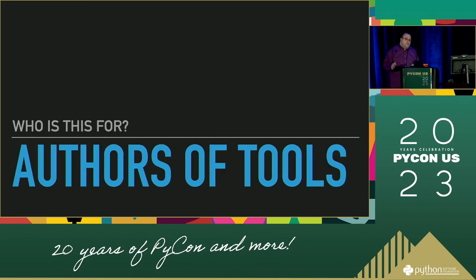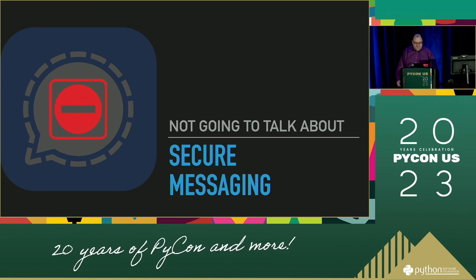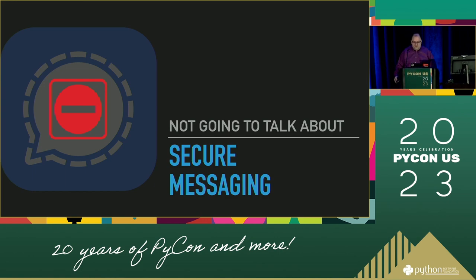I want to talk about how to do this as the author of software that expects to be dealing with secrets. In order to talk about that, I also need to talk about how users are going to behave to get the most out of the thought you put into that process. I think it's also useful to talk about what areas of security I'm not going to be talking about. I'm not going to be talking about secure messaging apps. This is not about how to share a secret with another human — a secret is something you don't share.